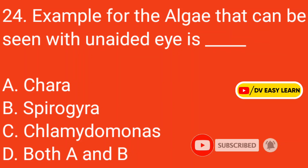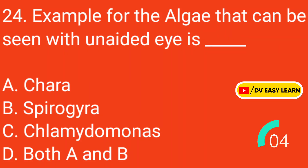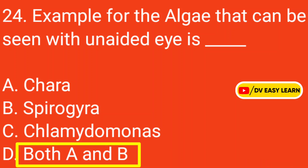Question 24: Example for algae that can be seen with the naked eye is — Correct answer: A and B, Chara and Spirogyra.